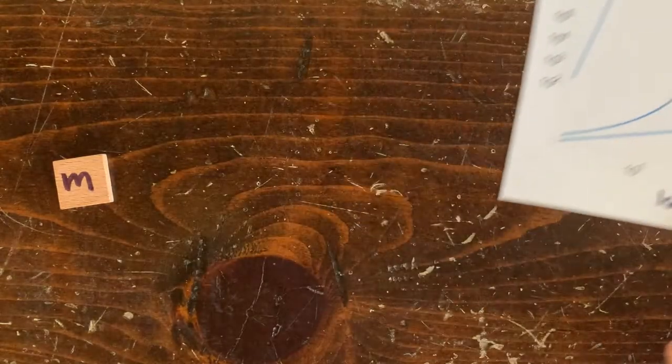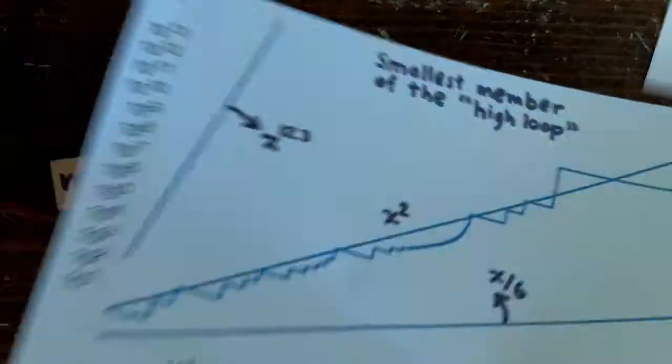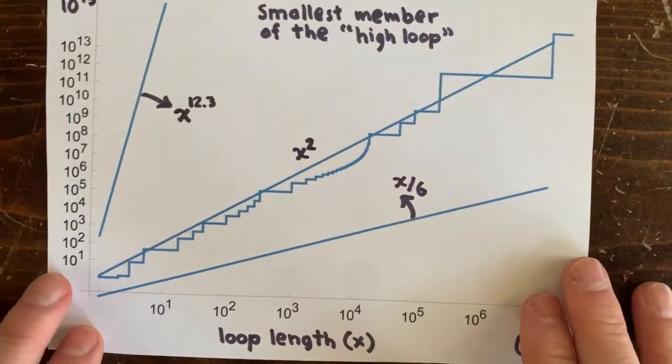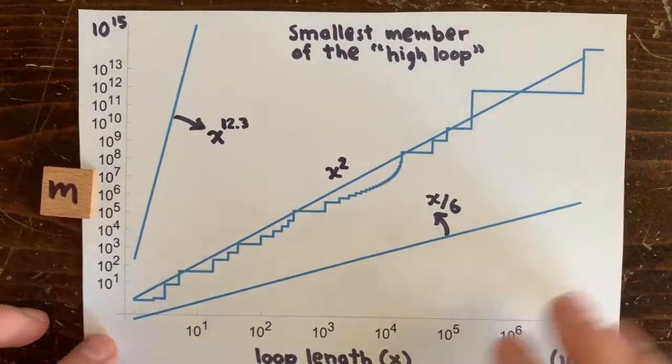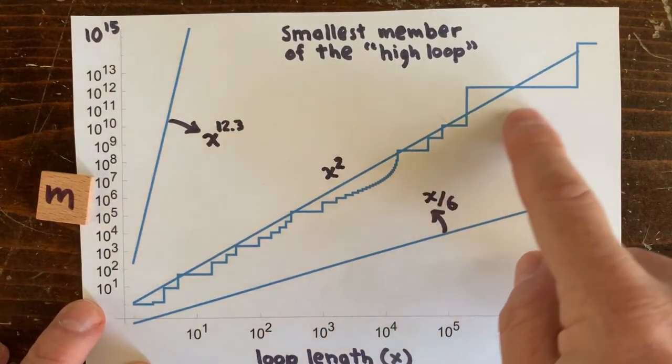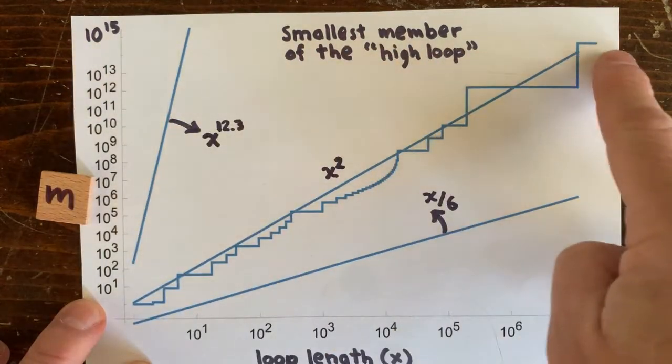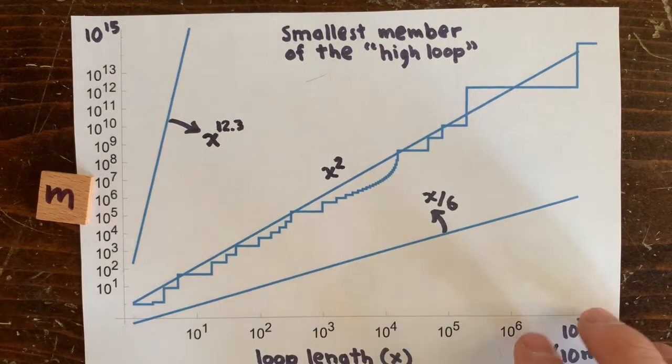Let's try x up to 10 million. This jagged line represents the record holders for the bottom members of the high loops. And nope, none of these can be integer loops because everybody's still got some member under 10 to the 60.